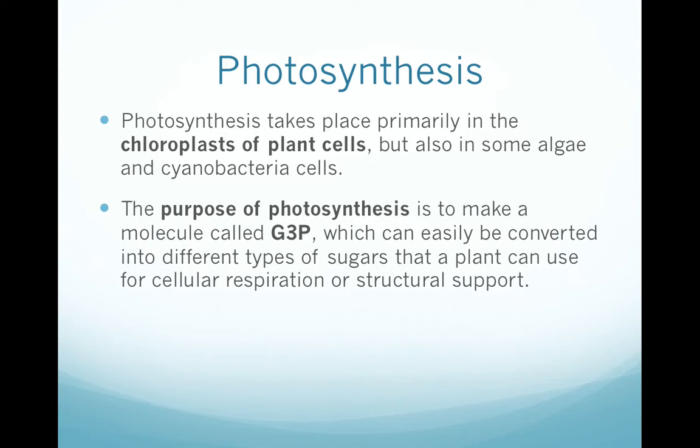The purpose of photosynthesis is for the plant cell to make a particular type of molecule called G3P. Think about G3P almost like a set of Legos, so those molecules can be combined to build other molecules, including glucose, which is the most common thing made from G3P, but the plant can also use G3P to make things like cellulose for structural support or proteins.